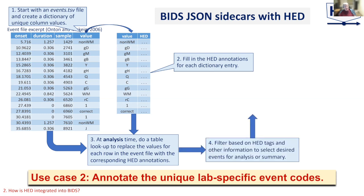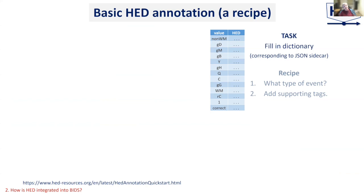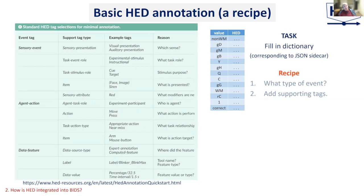For example, you can filter based on HED tags and other information to get a reduced event file that focuses on exactly the event markers you need. Our task is to fill in HED annotations in the dictionary of unique event codes using a recipe. HED provides much more sophisticated annotation capabilities, but basic annotation is really useful and fairly easy to do — you get a lot of benefit from that first insertion of annotation.